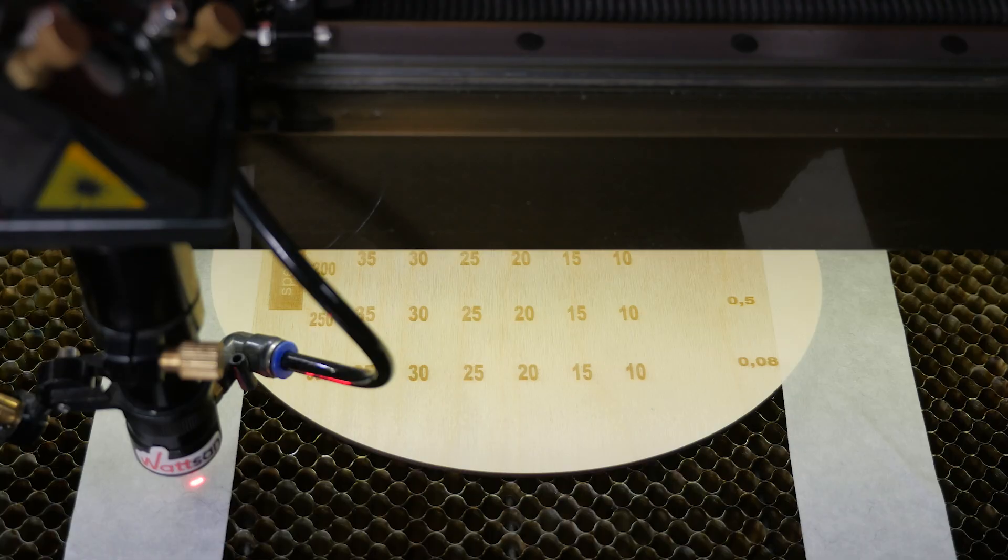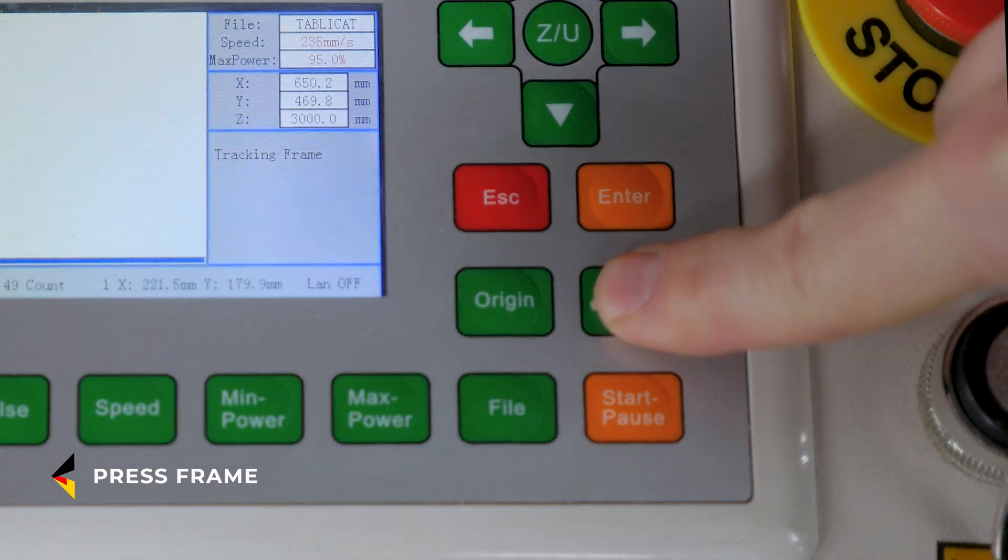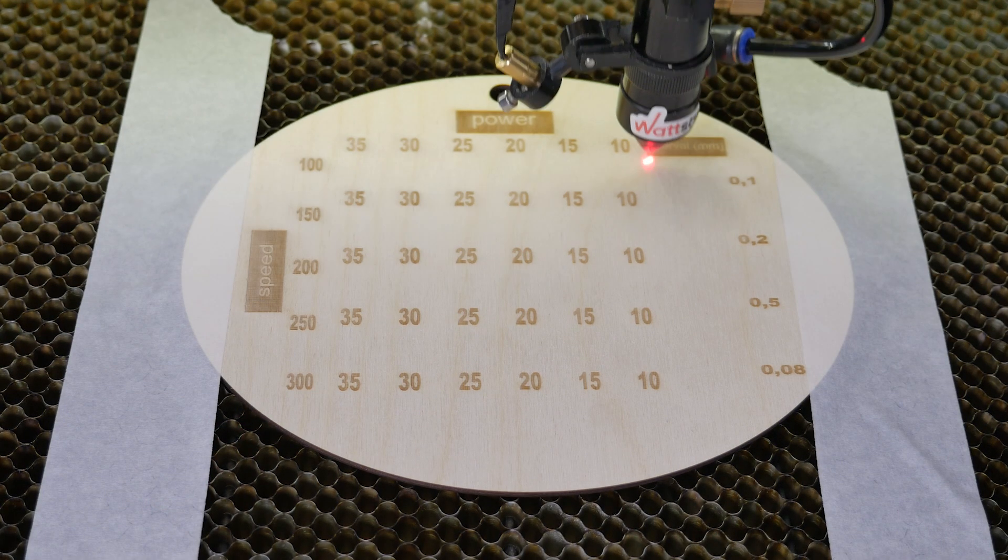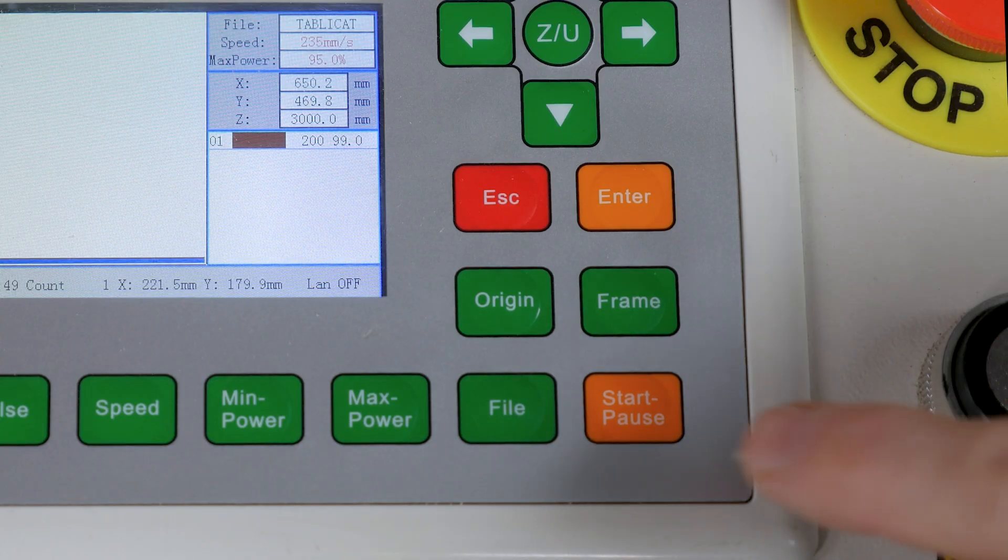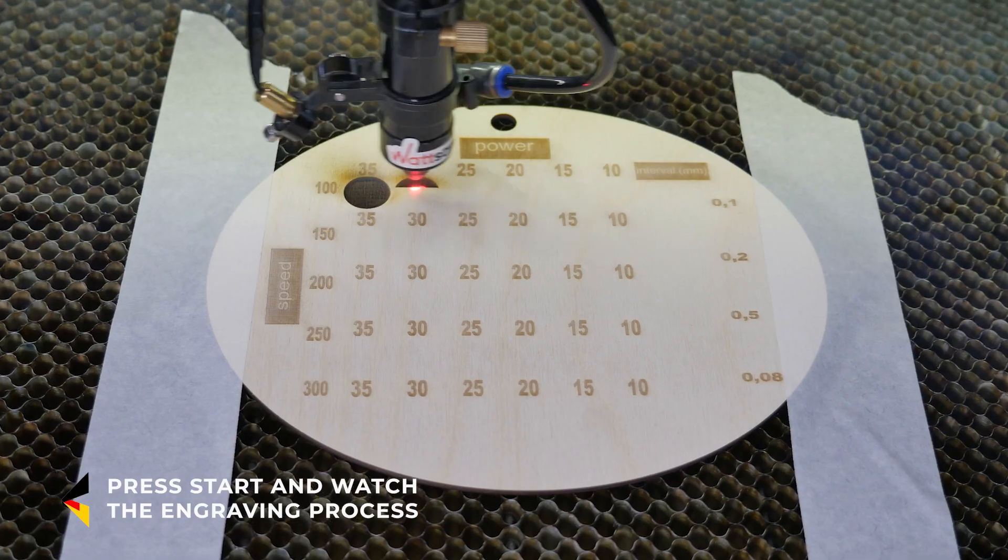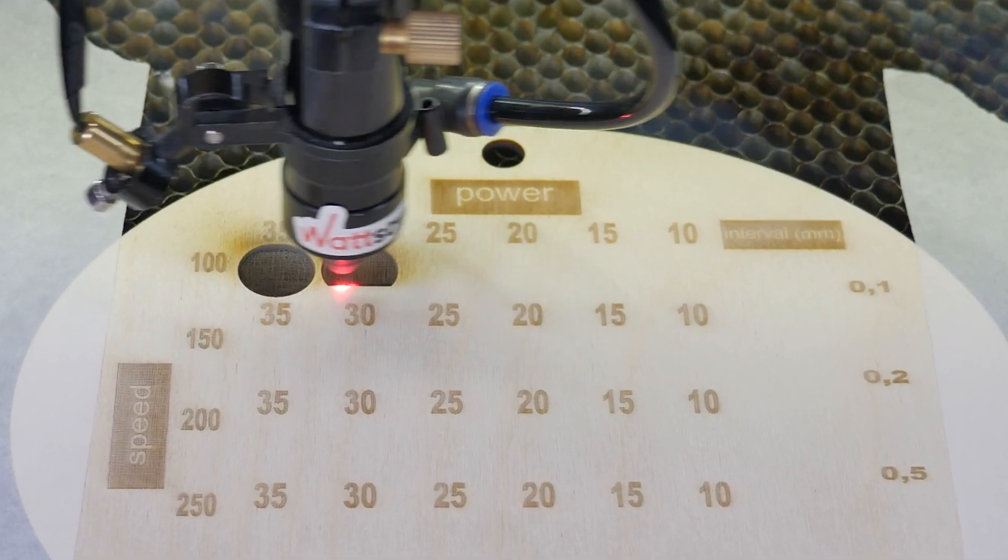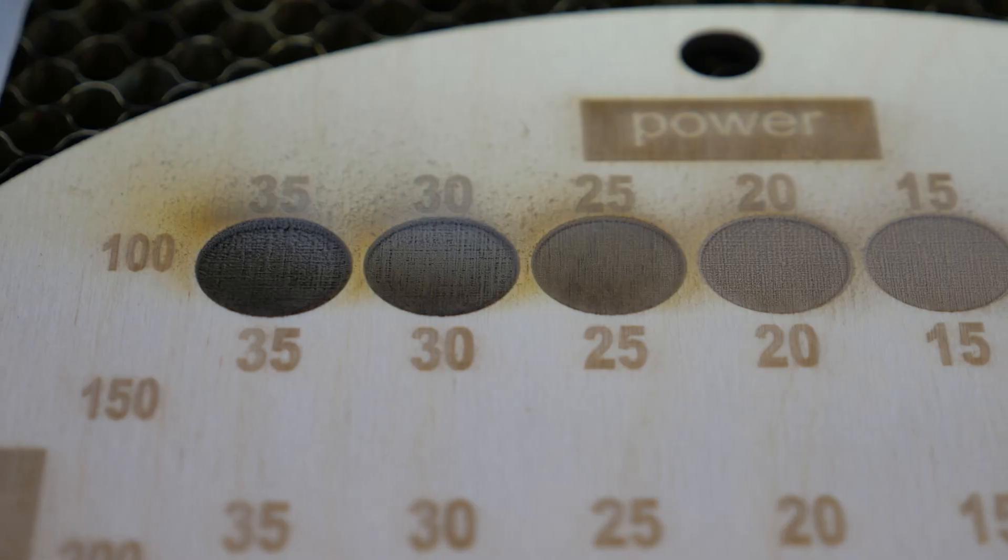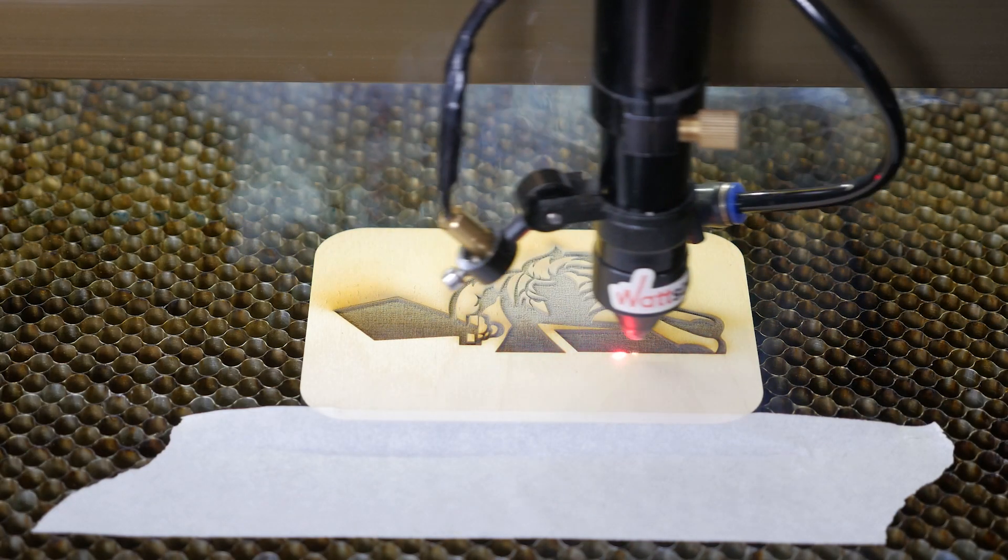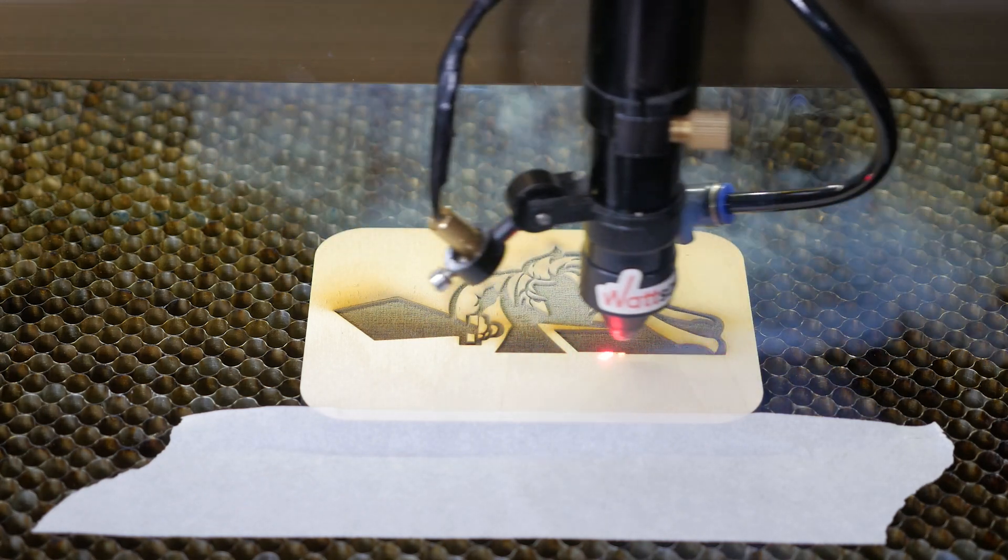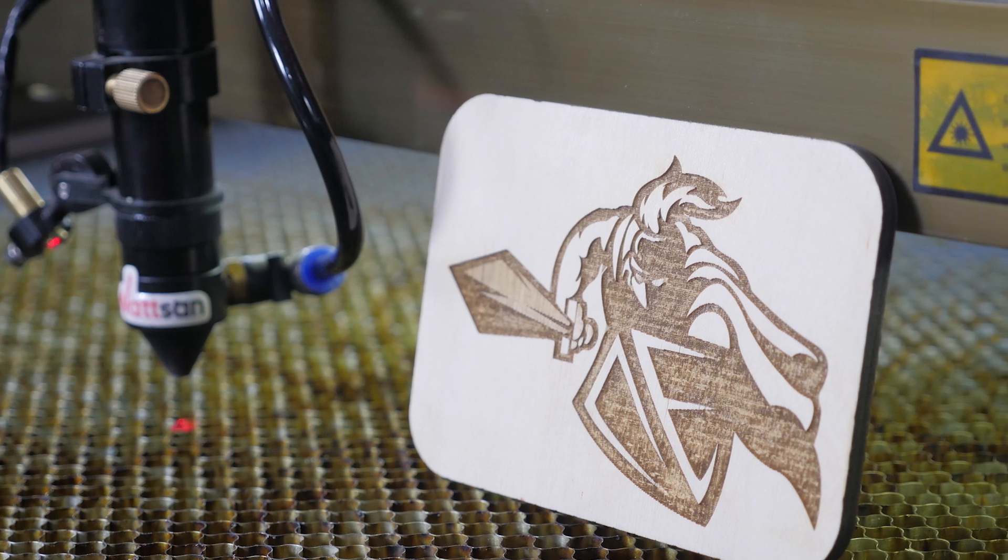Some carbon deposit can occur when engraving at a power of 35 percent and a speed of 100 millimeters per second, but there is no need to worry as this can be cleaned easily with sanding paper. Perhaps for your projects this kind of deep and dark engraving will be applicable.